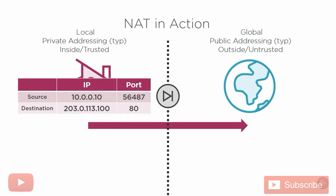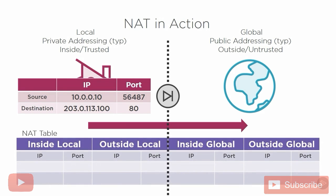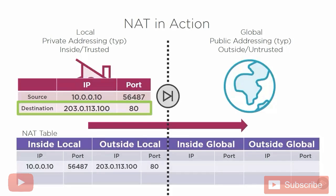They're going to browse to 203.0.113.100 on port 80, which is some website, and their source IP address is 10.0.0.10. If we try to send this message out to the internet with that private source address, it will fail. So as the packet arrives on our firewall and a NAT rule is applied, we record the source IP address and port number as the inside local address, and also record the outside local address — our destination IP address on the local side of NAT — before the packet moves out to the global network.